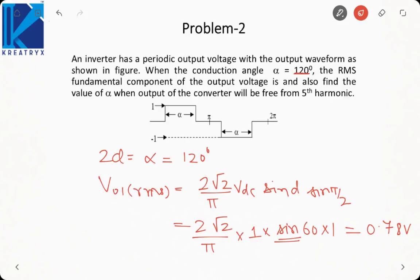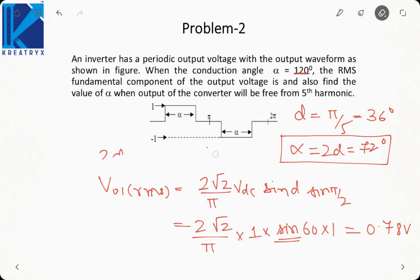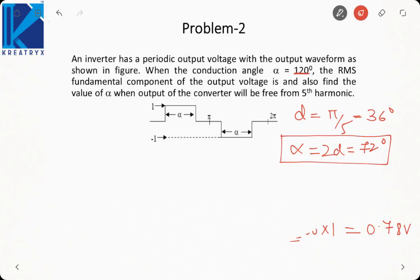Then in the next part we need to find the value of alpha for which converter is free from fifth harmonic. If it is free from fifth harmonic, then 2D is equal to alpha. Then, or we can say that D is equal to pi by 5, that is 36 degrees. Then what should be the value of alpha? It is equal to 2D, it should be 72 degrees. If pulse width is 72 degrees, then it will be free from fifth harmonic. Otherwise, you can also keep D is equal to 2pi by 5. So it will come out to be 72 degrees. Then alpha which is equal to 2D will come out to be 144 degrees. And since it is less than 180 degrees, it is perfectly valid. So alpha can have two values, either 72 degrees or 144 degrees.